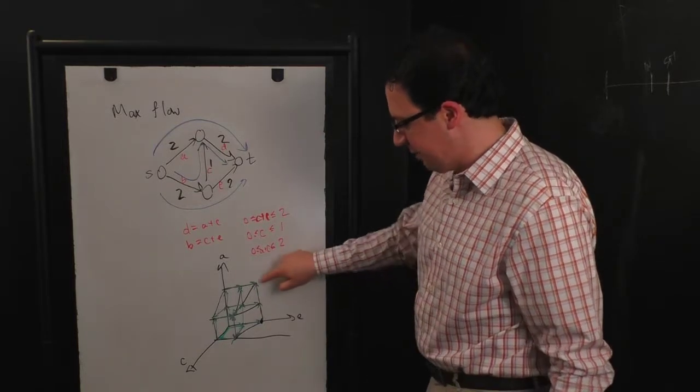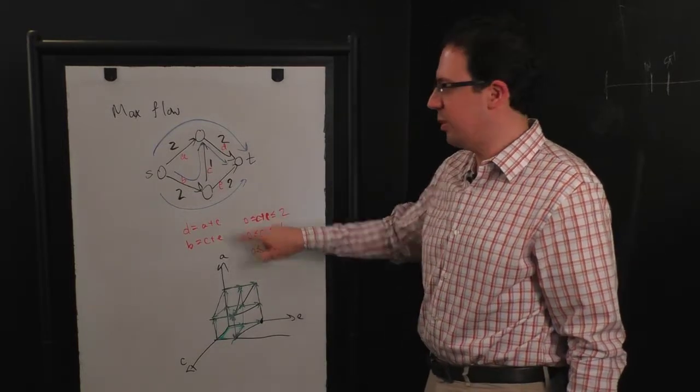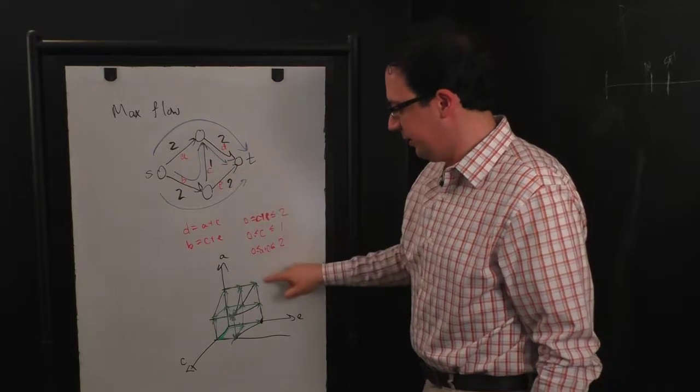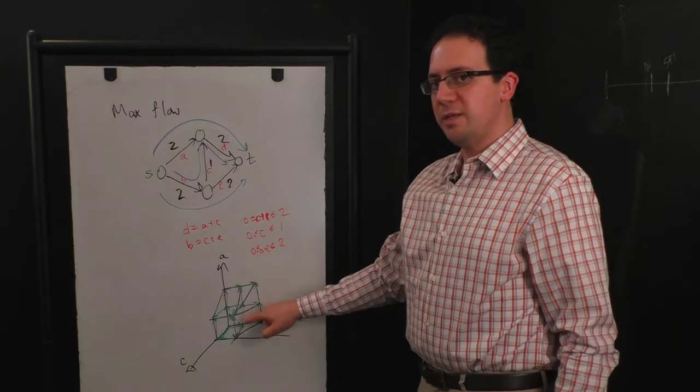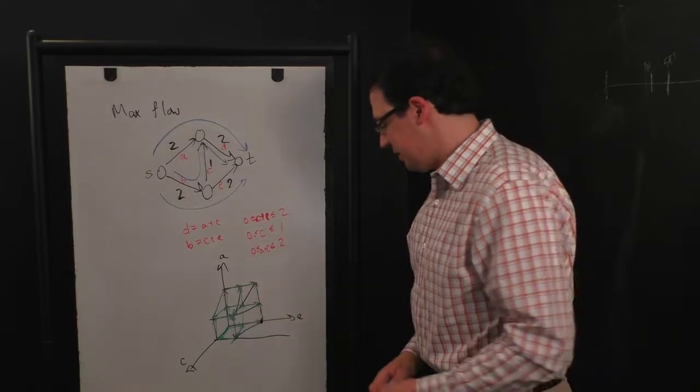So here we see we have a landscape. This is the global optimum where you're pushing two along here and two along here. But we got stuck in this local optimum. But we only got stuck because we limited ourselves in the choice of moves.